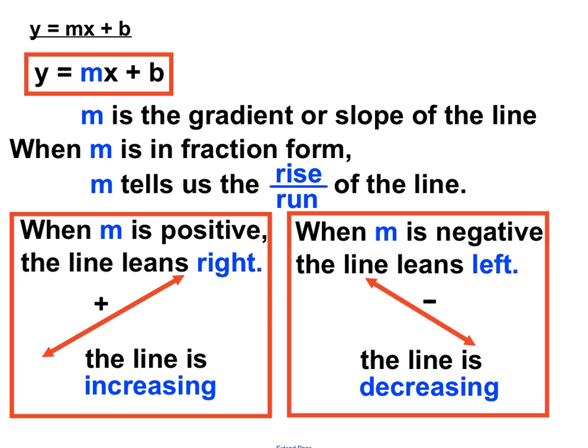There's lots to learn from this format of a line: y equals some number times x plus b. The m number — the number in front of x — is crucial. It tells us how steep the line is, the relationship between rise and run, particularly in fraction form. If that number is positive, the line leans to the right and is called increasing; if it's negative, the line leans to the left and is called decreasing. We'll use y equals mx plus b in the next video to sketch a line.